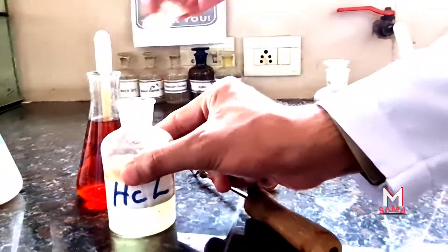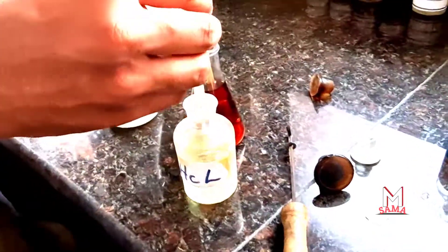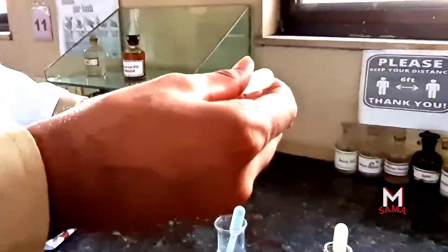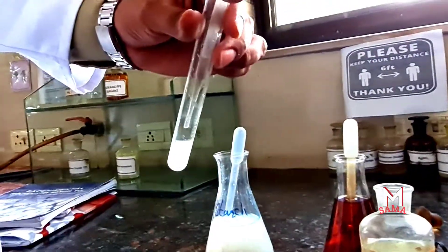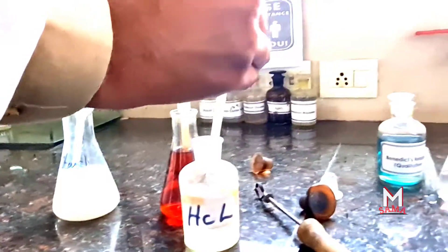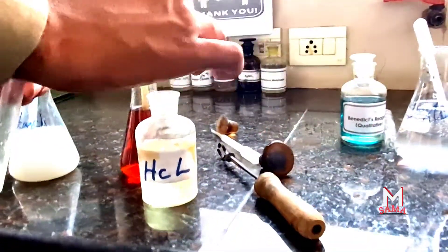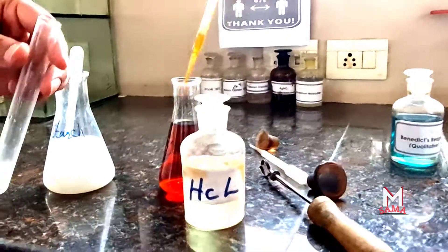Now add one drop of HCl because iodine only reacts with starch in acidic medium. So we will add one drop of HCl in this test tube to make it acidic. Now we will add one drop of the iodine solution.